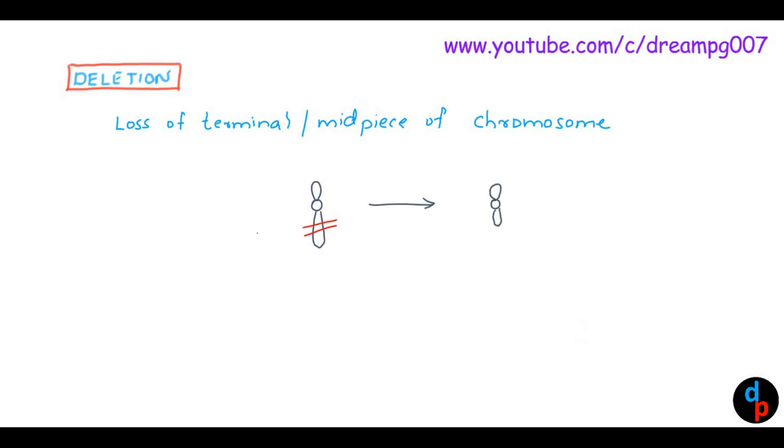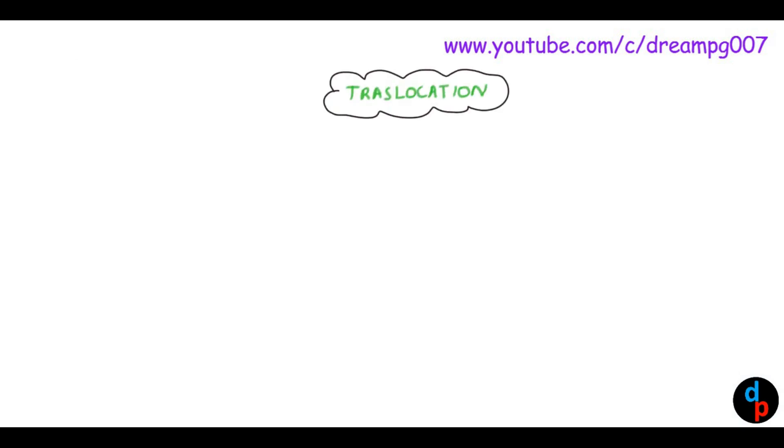Let's move on to translocation. There are two types of translocation: balanced reciprocal translocation and Robertsonian translocation.